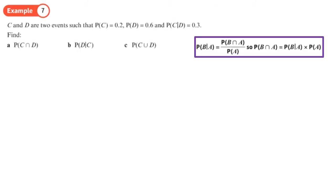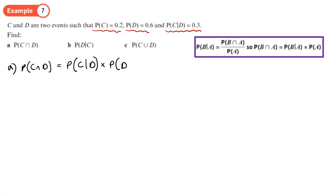On this one we have two events C and D where P(C) = 0.2, P(D) = 0.6, and P(C|D) = 0.3. For part A we want the intersection, and since we have P(C|D) we can use the multiplication rule: P(C∩D) = P(C|D) × P(D) = 0.3 × 0.6 = 0.18.